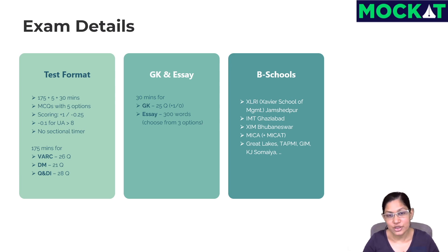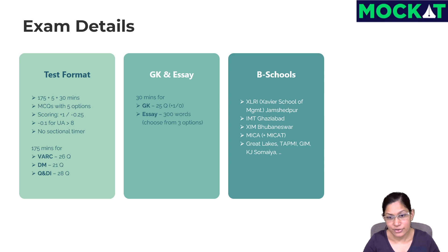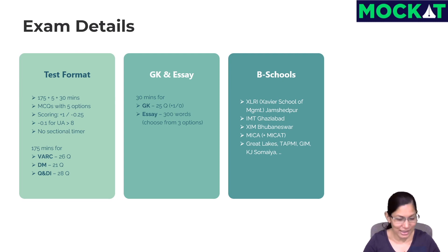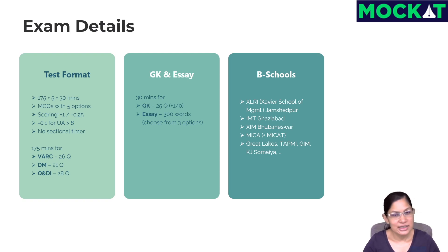The second section is GK and the SA. There have been some changes this year. We're getting 30 minutes, out of which maybe 10 or a max of 15 minutes should be sufficient for the 25 GK questions. The scoring pattern in GK is plus 1 for correct answers but no negative marking, so you should definitely attempt all the questions — just put BBB or CCC, choose one option and stick with it for all unattempted questions so that at least some will be correct.